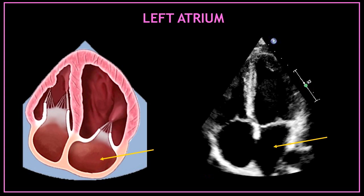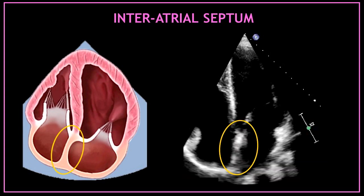At the bottom of the screen we have the left atrium. The left atrium is this black rounded echo-free space under the mitral valve. This white vertical line, very echogenic, in the middle of both atriums, is the inter-atrial septum.